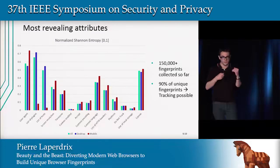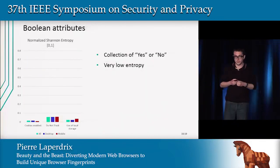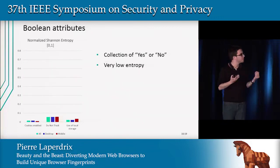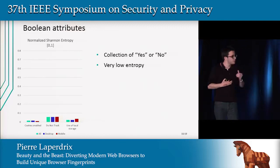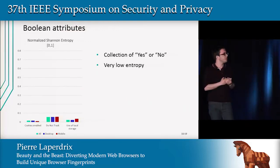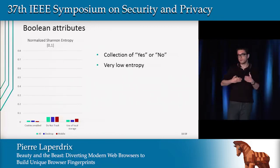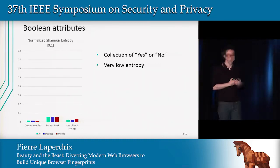Not everything we collect is equally meaningful. For example, the presence of cookies or the value of the Do Not Track header are basically Boolean attributes — yes or no. With that, you don't learn much about a device, so the entropy is very low. If you want to identify a device among other fingerprints, you have to turn to other attributes.